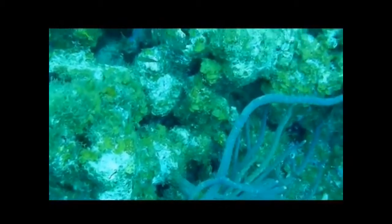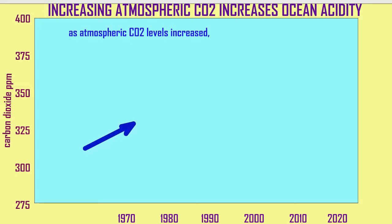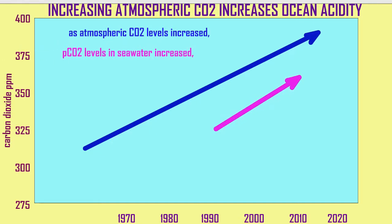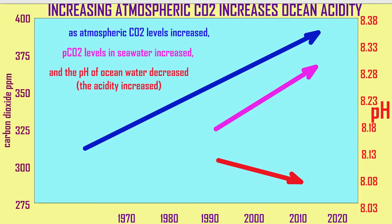Because of concern over the effects of climate change, carbon dioxide is measured in both the atmosphere and seawater, and the pH of ocean water has been measured. Increases in the carbon dioxide levels of the atmosphere correlate with increases in carbon dioxide in seawater and a decrease in the pH of ocean water.